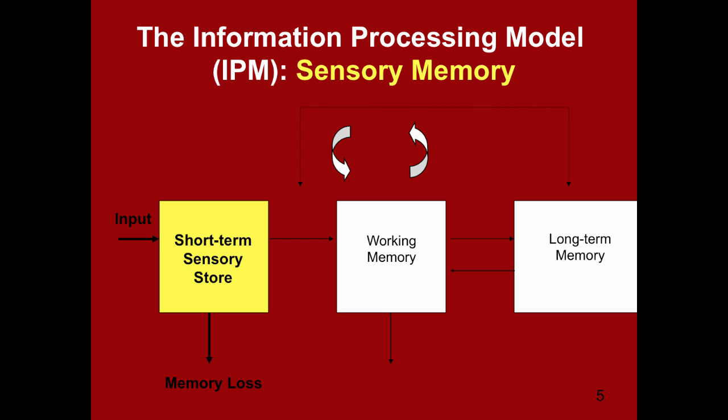The first component in the information processing model is the short-term sensory store, also referred to as sensory memory or sensory register. This is where all of the information first enters our mind — all of the sensory information we're receiving from our environment. What kind of input comes in? Think about your senses. How many senses do you have? Five, right? Unfortunately, that's not correct. Depending on the theorist, there can be anywhere from 10 to even upwards of 20 different senses. We know the basic five: sight, hearing, smell, taste, and touch.